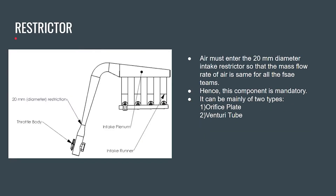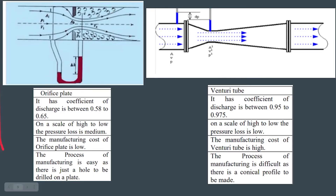The intake restrictor is a component mandated by the rules of the FSA competition, in which all air entering the engine must pass through a 20 mm diameter gap so that the mass flow rate of air is the same for all FSA teams. There are two types of restrictors: the orifice plate and the venturi tube. On the left is the orifice plate restrictor and on the right is the venturi tube.